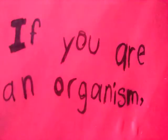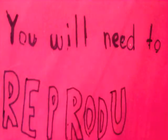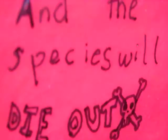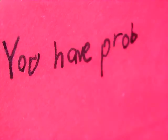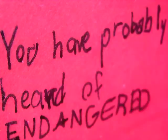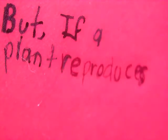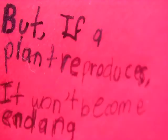If you're an organism, you will need to reproduce. Otherwise, there will be no more of the species and the species will die out. You've probably heard of endangered animals — well, there are also endangered plants. But if a plant reproduces, it won't become endangered. I'll show you how a plant reproduces.